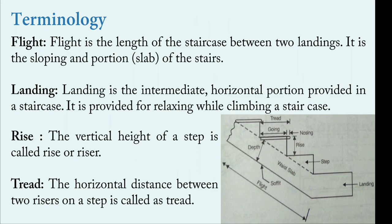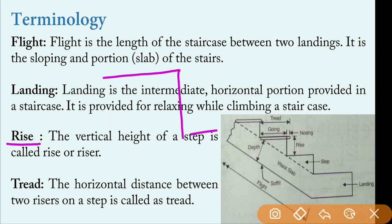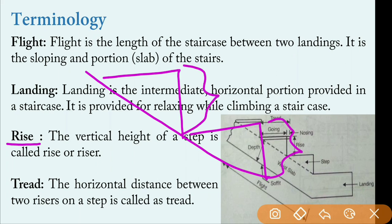The vertical height of a step is called the rise or riser. The staircase consists of steps, and this vertical part is called the rise or riser. The horizontal distance between two risers on a step is called the tread — this horizontal dimension is called a tread.